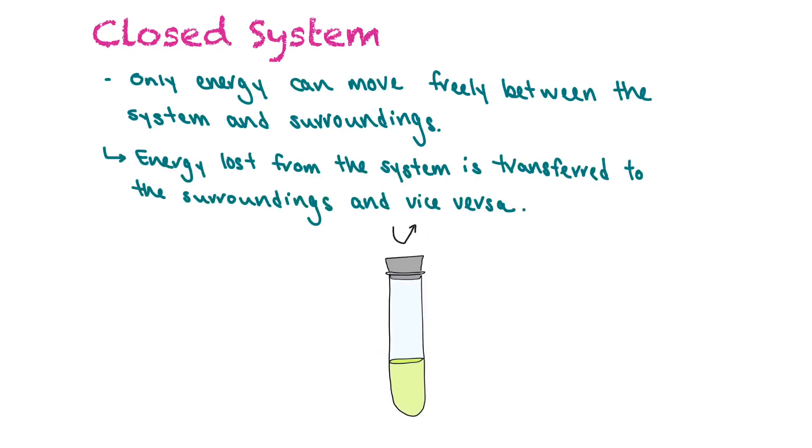A closed system, the only thing that can move freely between the system and the surroundings is energy. Matter can't enter or leave because it's closed off. Any energy that's lost from the system is transferred to the surroundings, and energy can also be absorbed from the surroundings.